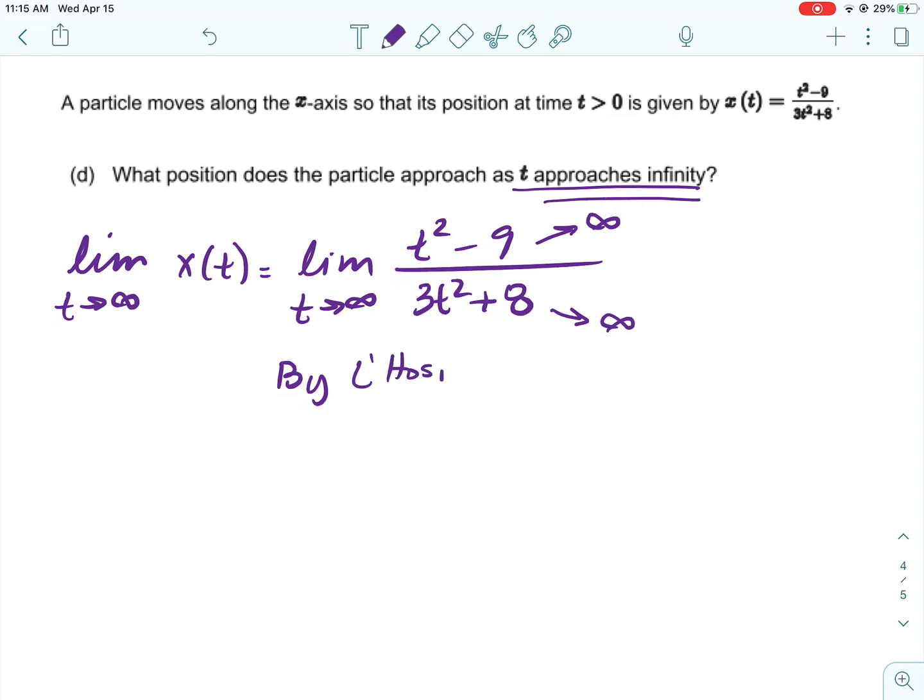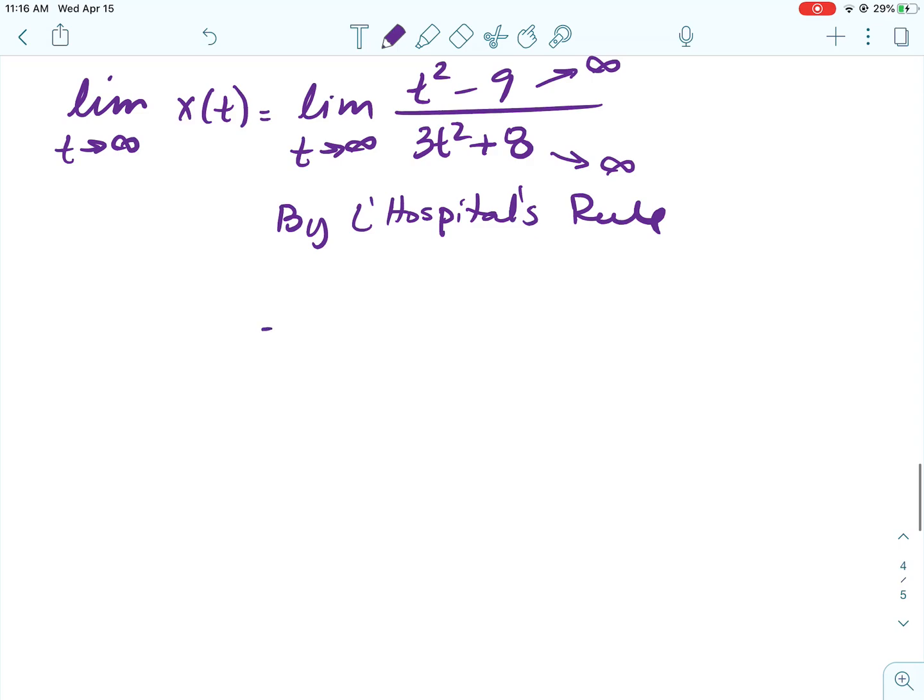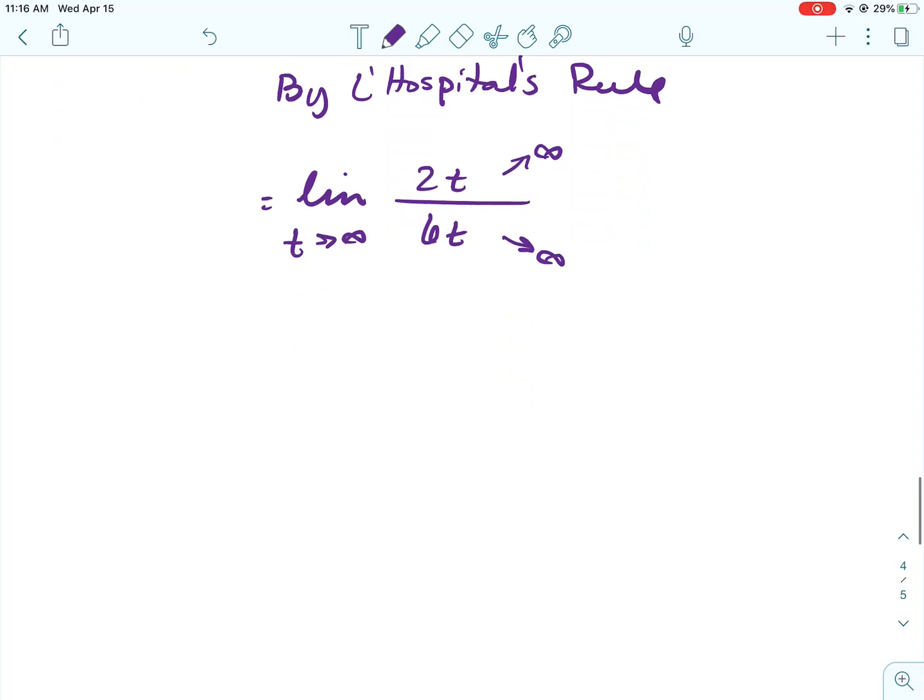Alright, so when I put infinity in for t and square and subtract 9, I get infinity. If I put infinity in for t, square and multiply by 3 and add 8 to it, I get infinity again. So that means I can use L'Hopital.